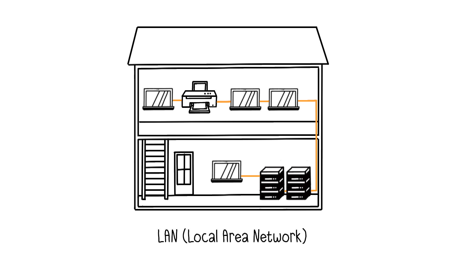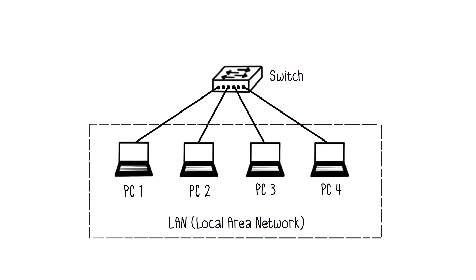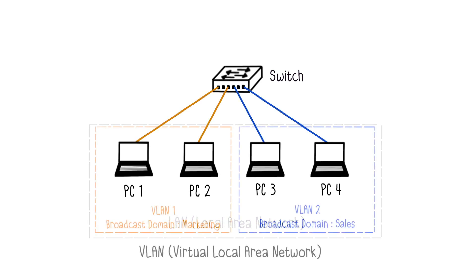The most popular type of LAN is Ethernet LAN. In this example, within this small company, there is a local network where several work computers share network file servers and printers. In a LAN, all machines can communicate with each other — they are said to be in the same broadcast domain. However, here we want to have a dedicated local network with machines reserved for the marketing team and another one with machines for salespeople. That's why we need VLANs.